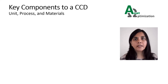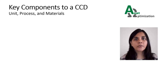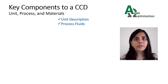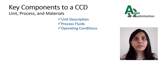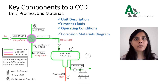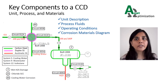The key components of a CCD can be divided into three categories. The first category — unit, process, and materials — includes information on the unit, such as when the unit was constructed, details on major revamp or expansion projects, and the process description. Process stream compositions, including corrosive species, operating conditions including normal and non-standard operations, and a corrosion materials diagram, or CMD, also fall into this category.